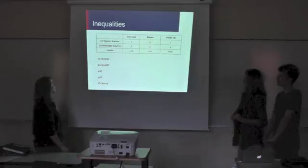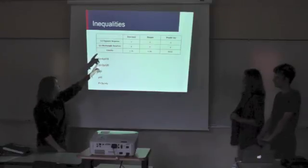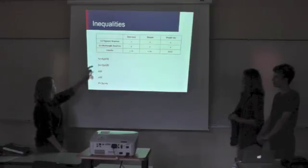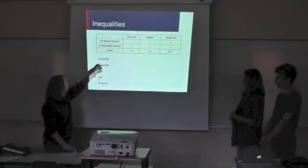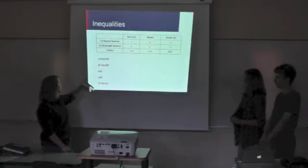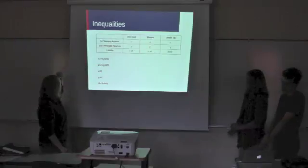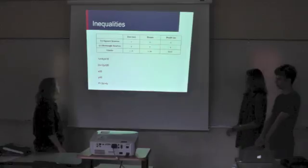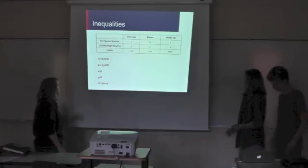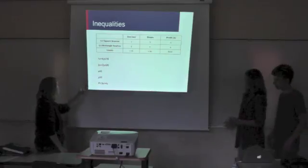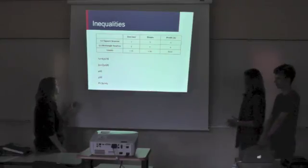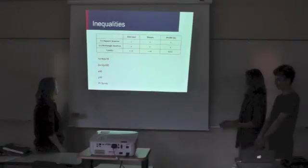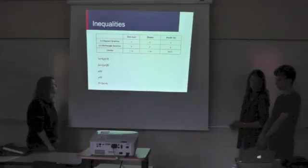So these are the inequalities. We've got those from the table up there. 1x plus 4y is less than or equal to 16. 2x plus 2y is less than or equal to 20. And x is greater than or equal to 0, and y is greater than or equal to 0. And p is the profit, so p equals 3x plus 4y.